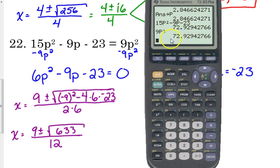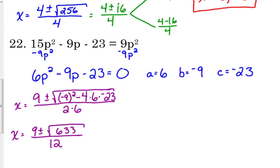And then just type it in. See what you get for the left side, see what you get for the right side. Make sure they match up. Now if 9 plus the square root of 633 over 12 works, then most likely 9 minus the square root of 633 over 12 is going to work. So I'm not worried about checking the other one.